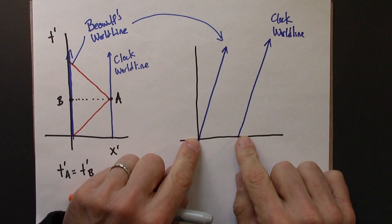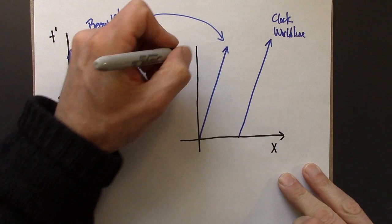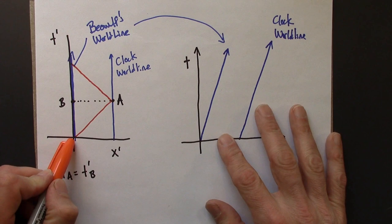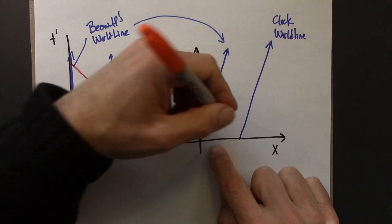Alright, so then in Anastasia's reference frame, let me label these X and T. In Anastasia's reference frame, the speed of light is still the speed of light, even though Beowulf is moving and it was Beowulf who initiated the light beam. The speed of light is still the speed of light. So this light flash has a slope of one and this light flash has a slope of one.